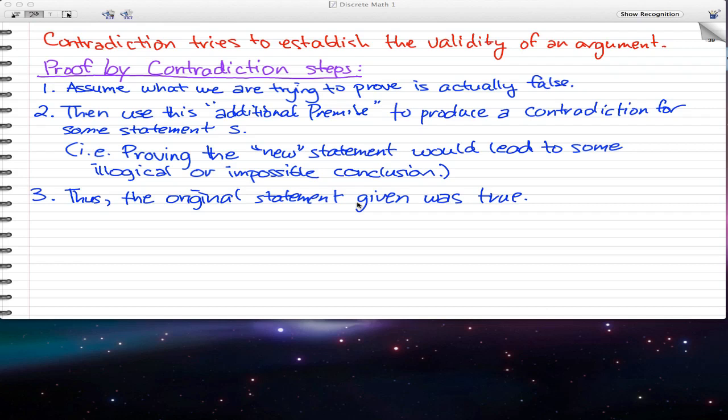Here are the proof by contradiction steps. What we are trying to do is assume that a certain statement or a certain conclusion is false given a certain set of premises. Now we're going to prove this new statement, and by proving this statement, we find that it's illogical, so we find that ultimately, the original statement given is actually true. So those are kind of the steps.